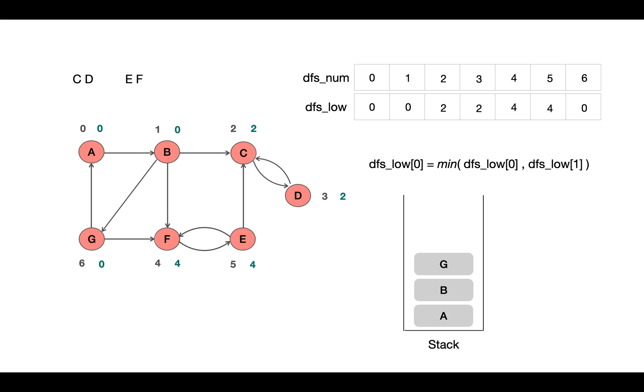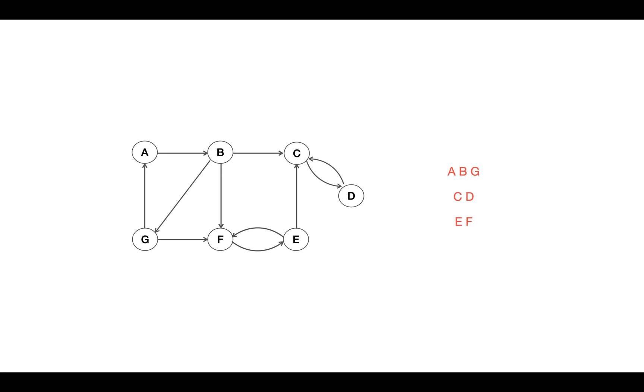At last, DFS_num and DFS_low are equal for this node, so we pop out all nodes above A. And this is another SCC we got in the given graph.